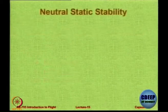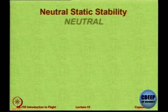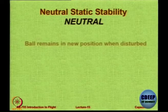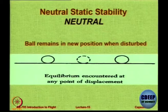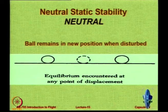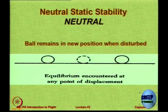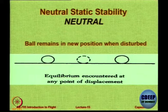Let us look at these three types using a different analogy. First is neutral stability: we have a ball on a flat table. We push it to a position, it goes there and remains there. Push it to the left and leave it — it remains there. This is neutral.